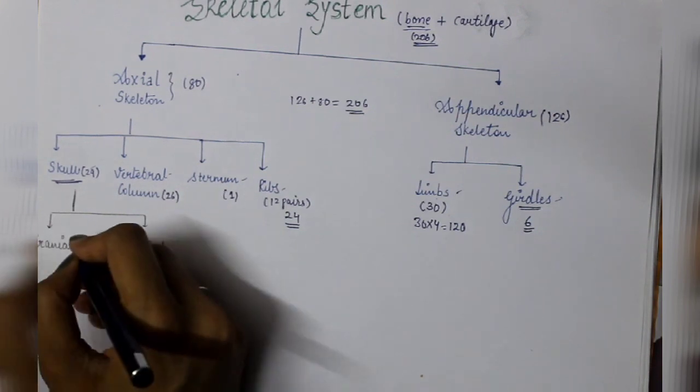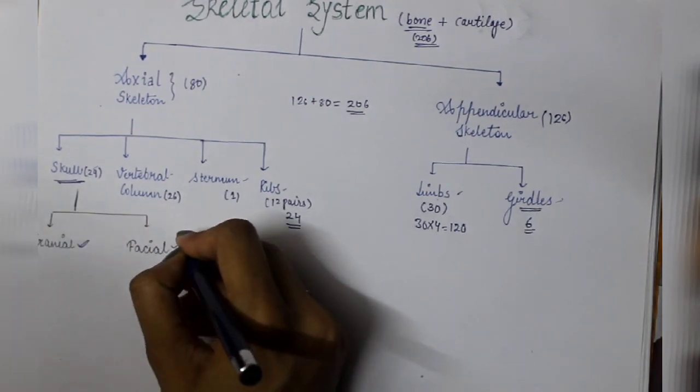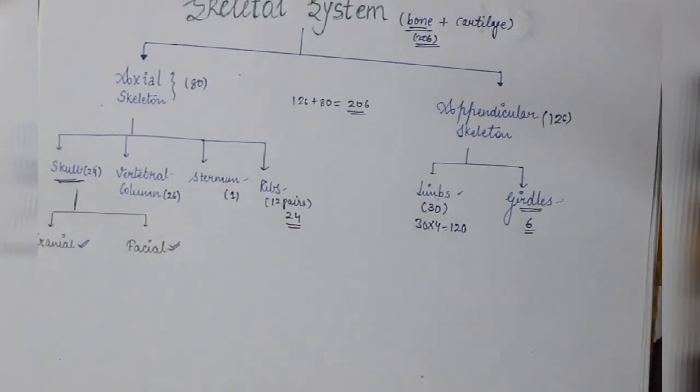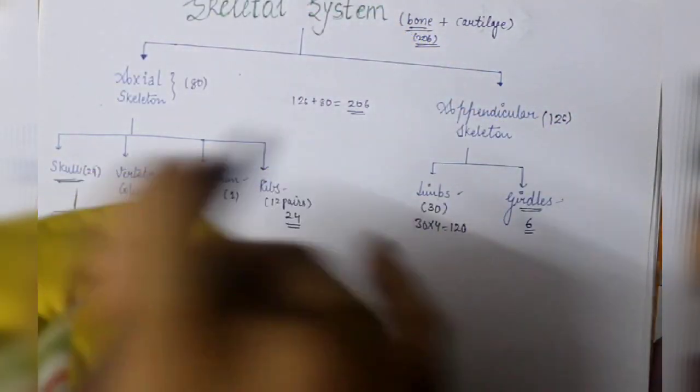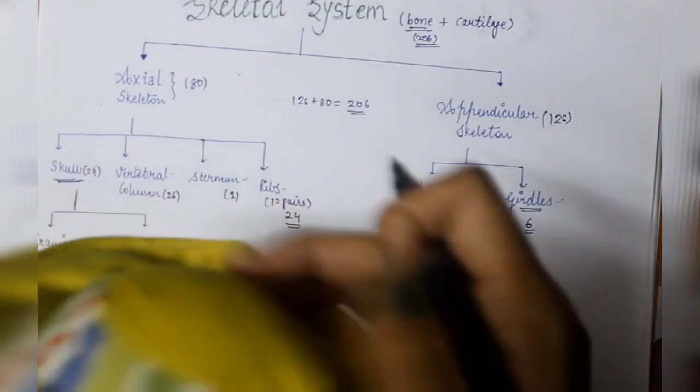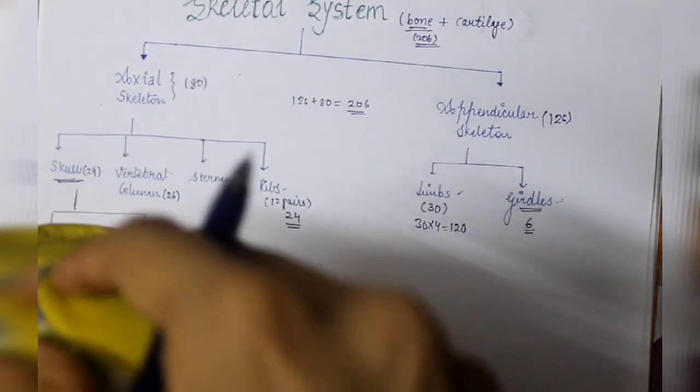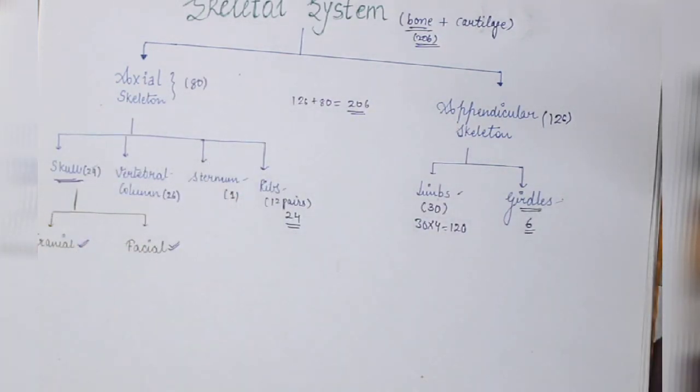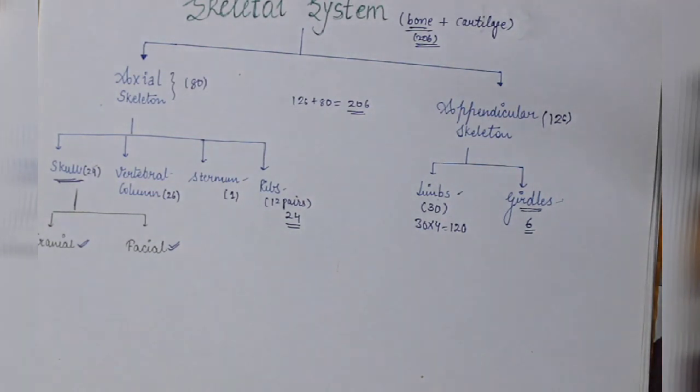So there are two parts: one is cranial region and one is facial region. Once again, if I show this dummy, there are many bones in the face of this dummy. All of them are facial bones. And the upper region, what do we call it? Cranial bones, which protects your brain.